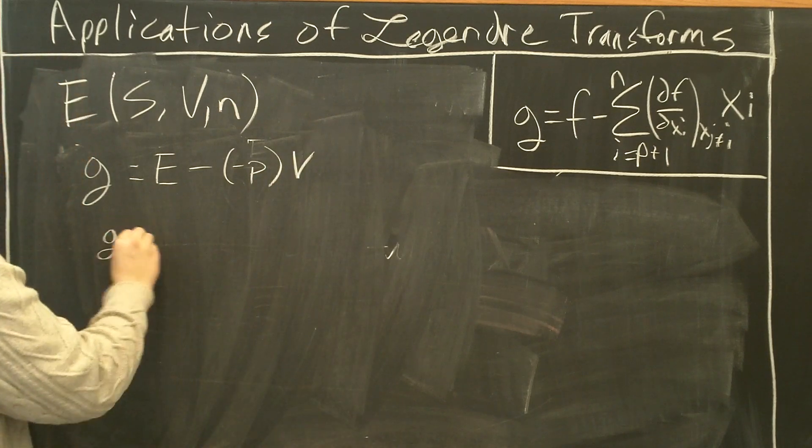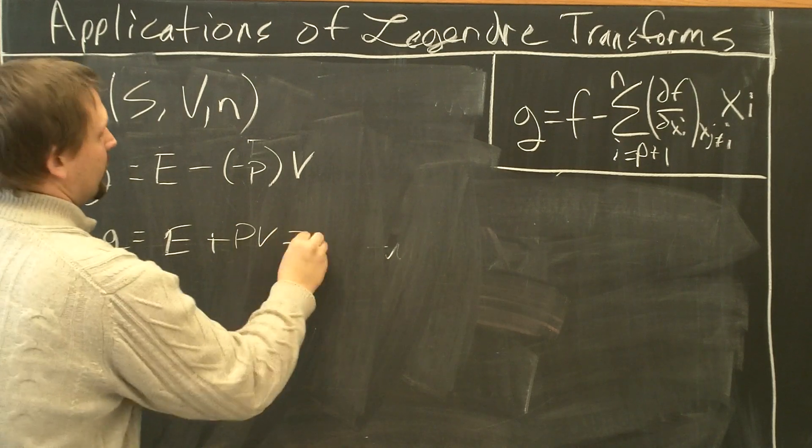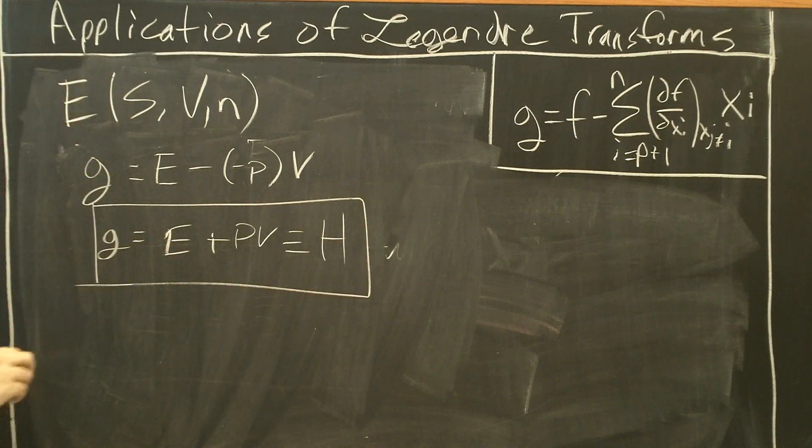So this new function equals E plus PV. This is defined as H, the enthalpy of the system.